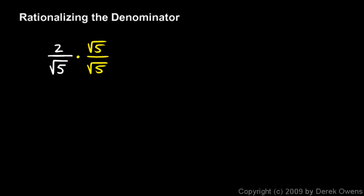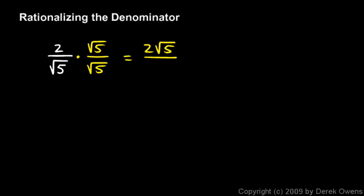When I multiply these, I just multiply across the top, and I get 2 times the square root of 5 in the numerator. When I multiply on the bottom, the square root of 5 times the square root of 5 is just 5. And this is my answer, 2 root 5 over 5, and it's considered properly simplified because there are no radicals underneath my fraction.